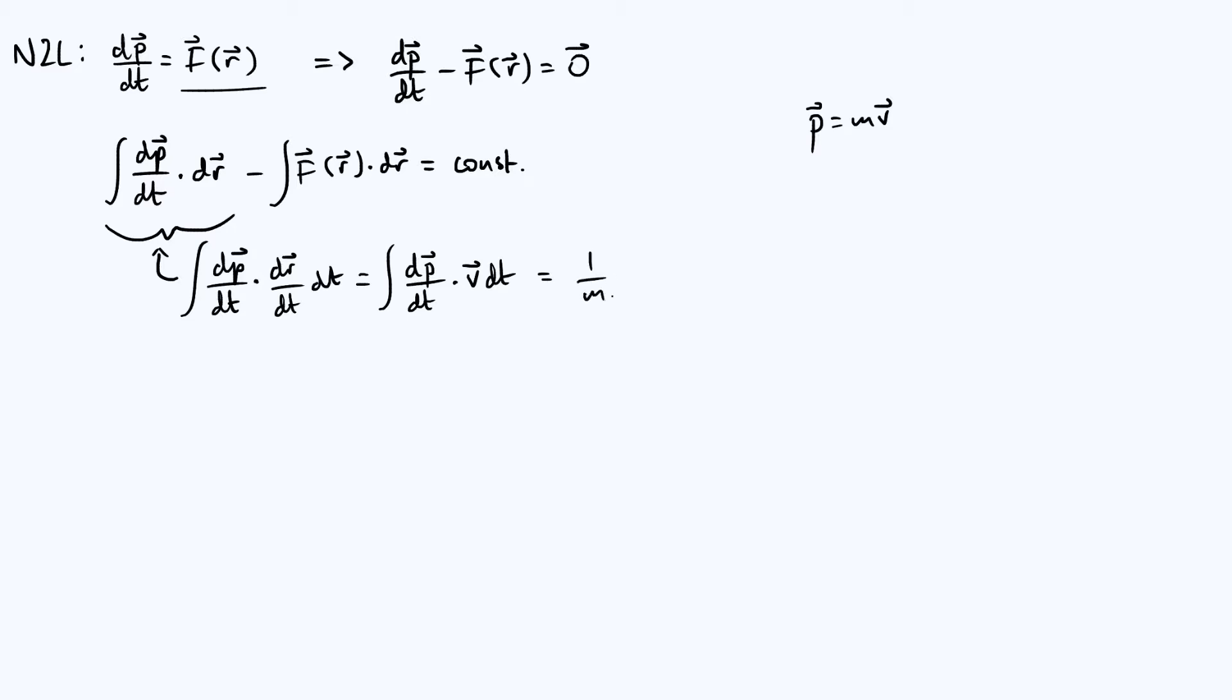And assuming that the mass is constant, we can take that out of the integral. This is 1/m times the integral of dp/dt dotted with p with respect to time.